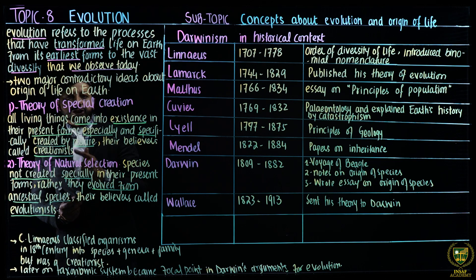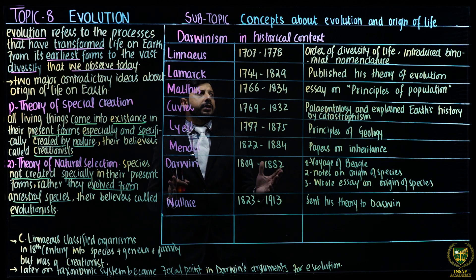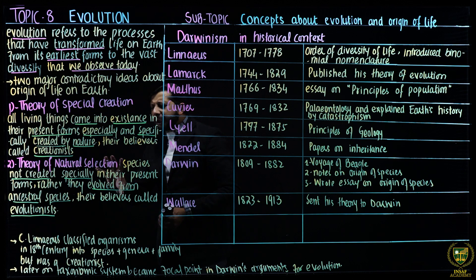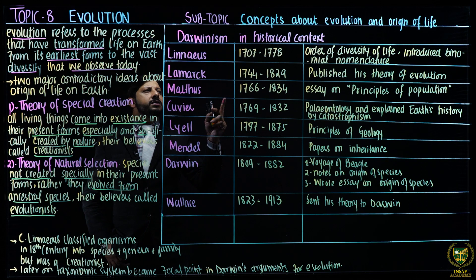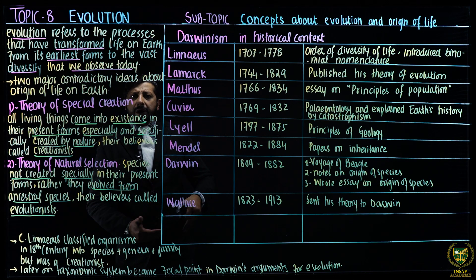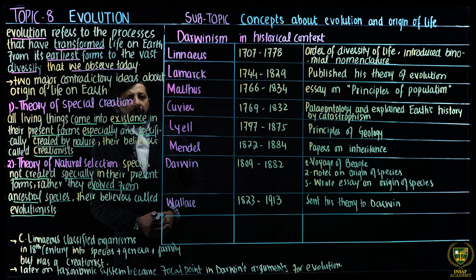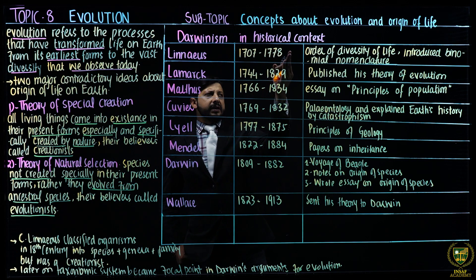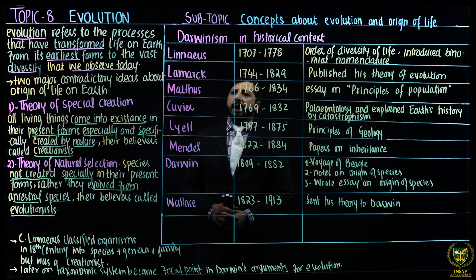Those who believe in the theory of special creation are called creationists, and those who believe in natural selection are called evolutionists. Let's have a look at a certain table — that is Darwinism in historical context. Whenever we talk about evolution, this table listing scientists, their life spans, and their major achievements is important for your MCQs.